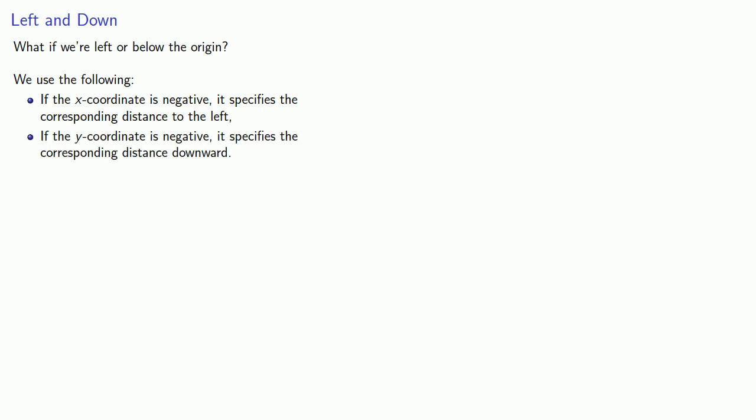We can use these coordinates to express our location if we're to the right and above the origin, but what if we're left or below the origin? To account for these possibilities, we use the following: If the x-coordinate is negative, it specifies the corresponding distance to the left, and if the y-coordinate is negative, it specifies the corresponding distance downward.